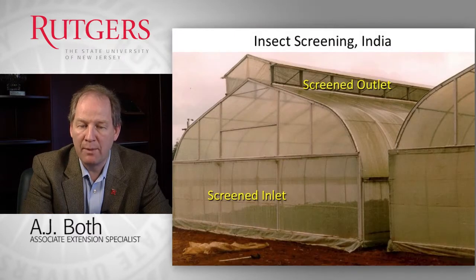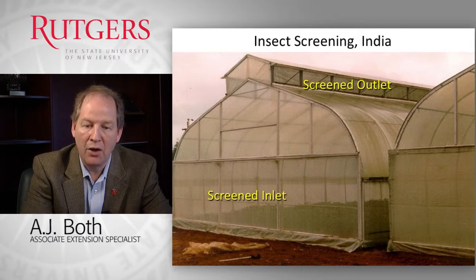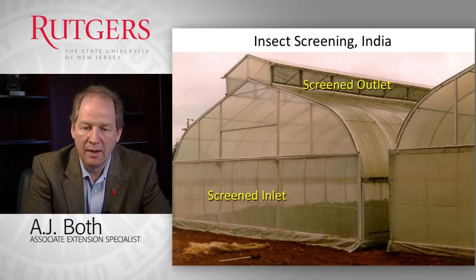In some warm climates like India, you can see that the greenhouse is mostly a screen house where inlet and outlet openings are heavily screened and otherwise the greenhouse is more or less exposed to environmental conditions. Not a lot of heating or other environmental control practices are being used, but the screens are obviously important to try to maintain insect-free conditions inside the growing environment.